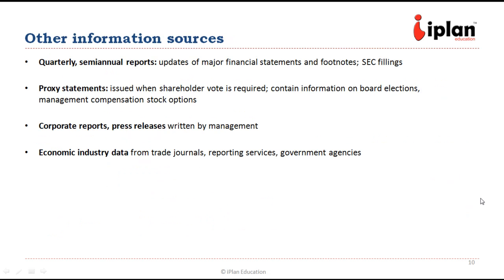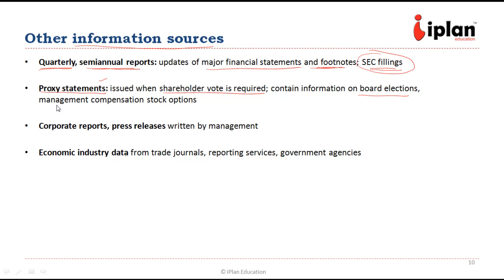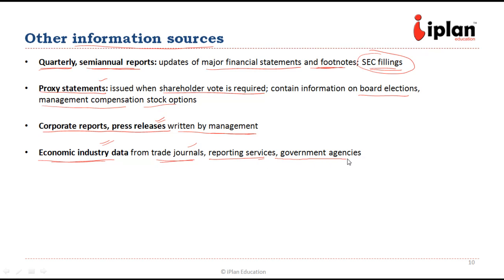Besides financial statements, there are other sources of information about a company. There could be quarterly or semi-annual reports that update the major financial statements and footnotes. There could be SEC filings, which are mandatory for publicly listed companies. Other sources include proxy statements, issued when a shareholder vote is required — they contain information regarding board elections, management compensation, stock options, etc. There are also corporate reports and press releases written by management themselves. Finally, another important source is economic and industry data, generally provided by trade journals, reporting services, or government agencies.